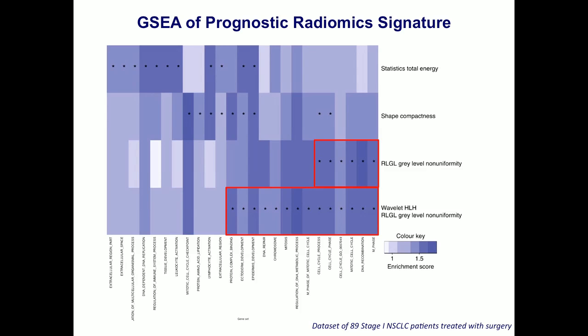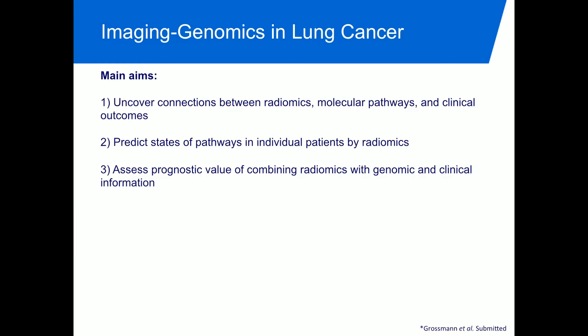If a CT scan shows a more heterogeneous tumor, there is very likely an upregulation of cell cycling and proliferation pathways; if it is a more homogeneous tumor, it is likely a downregulation of these pathways. These are by far the strongest associations we always find. Building on this, Patrick Grossman — a biostatistician in my group — did an imaging genomics analysis in lung cancer, trying to discover unique connections between radiomics data and molecular pathways and clinical outcomes, and also whether radiomics can predict the activation state of a pathway.